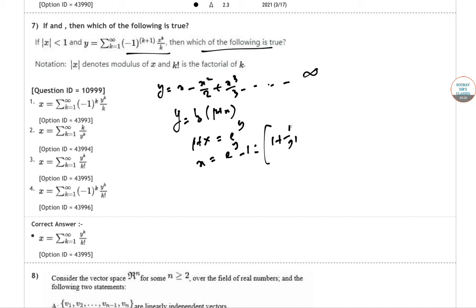So 1 plus y by 1 factorial plus y square by 2 factorial and so on, minus 1. In this case it will be y by 1 factorial plus y square by 2 factorial only. In that way, y to the power k by k factorial, where k equals 1 to infinity.